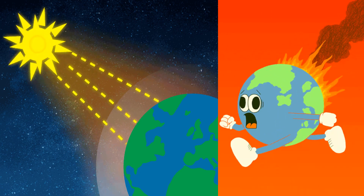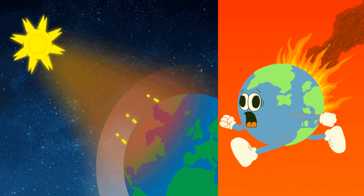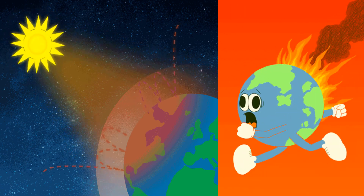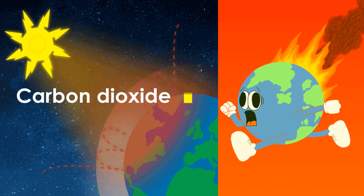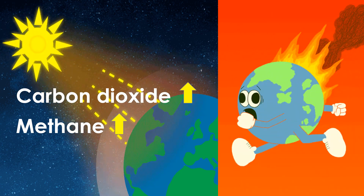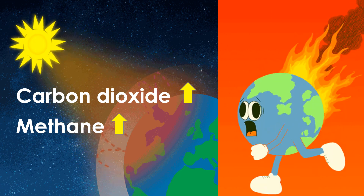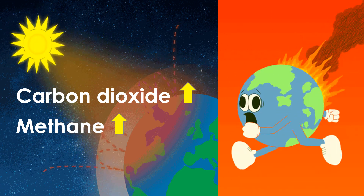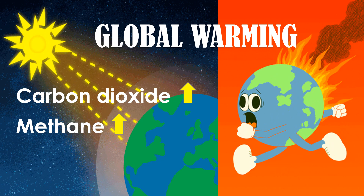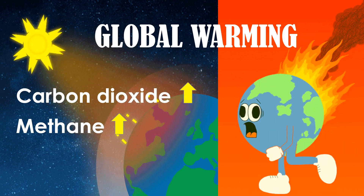When we upset the balance of the gases in our atmosphere, problems will happen. Right now, we are adding more carbon dioxide and methane because of our activities. The result of these additional gases is more heat gets trapped on the Earth, which causes global warming. Global warming makes the temperature of the Earth very hot.